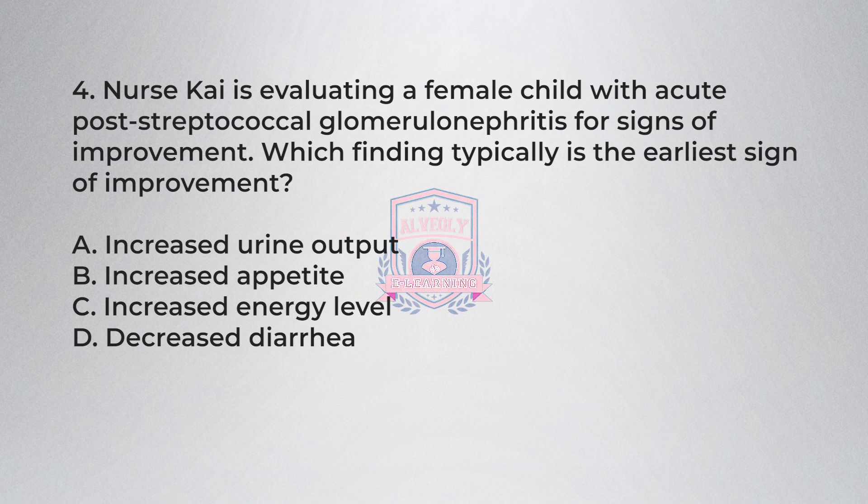Question 4: Nurse Chi is evaluating a female child with acute post-streptococcal glomerulonephritis for signs of improvement. Which finding typically is the earliest sign of improvement? A) Increased urine output, B) Increased appetite, C) Increased energy level, D) Decreased diarrhea.